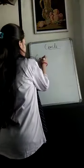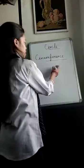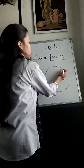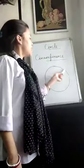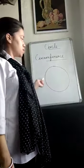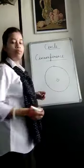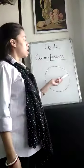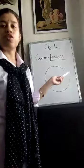Now next is circumference of a circle. First we draw a circle and make a center point O. The length of the boundary of the circle is called the circumference of a circle.